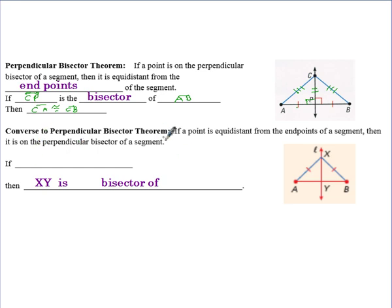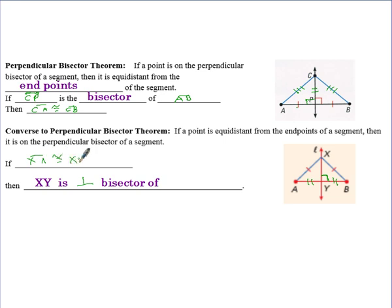The converse of the perpendicular bisector theorem states that if a point is equidistant from the endpoints of a segment, then it lies on the perpendicular bisector. So if we know that angle is 90 degrees and XA is congruent to XB, then we can say that XY is the perpendicular bisector of AB.